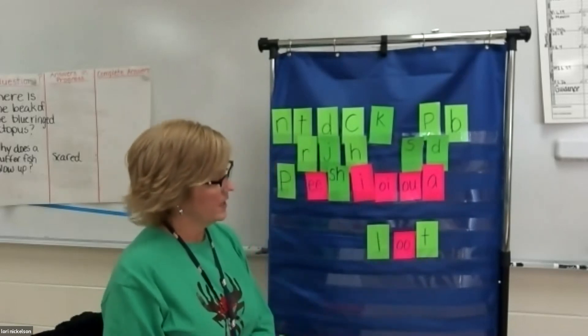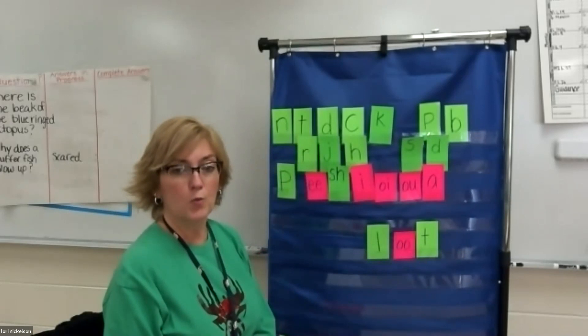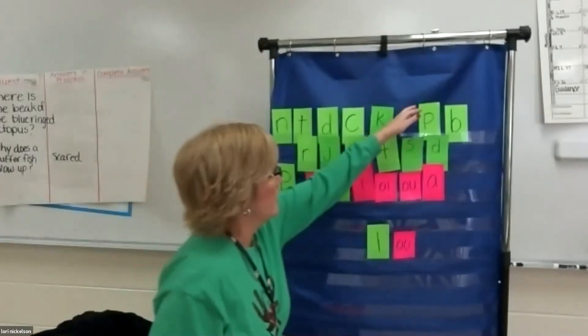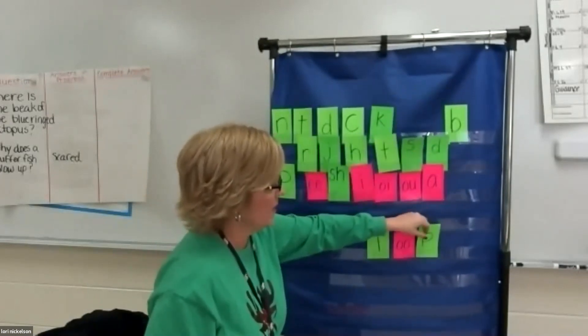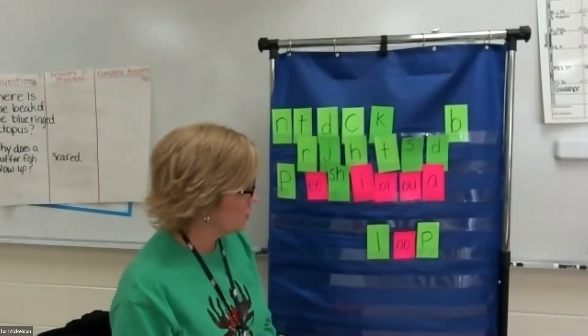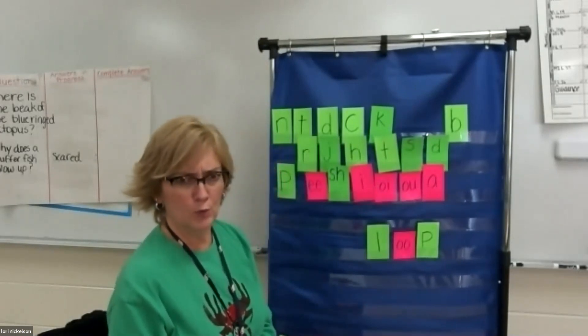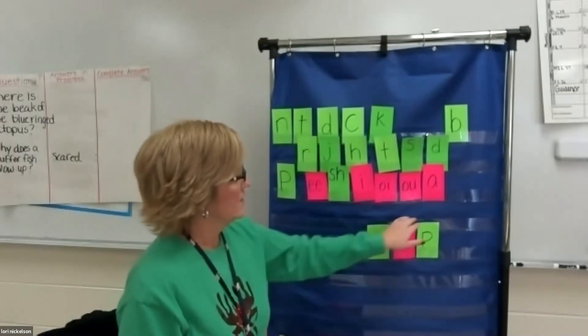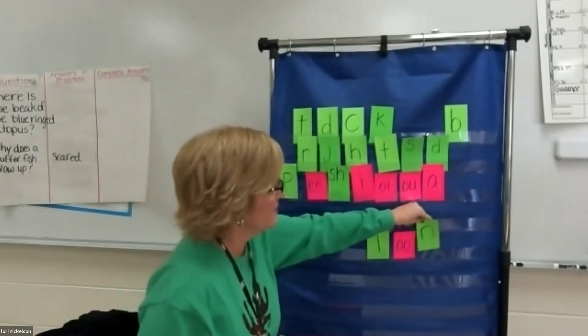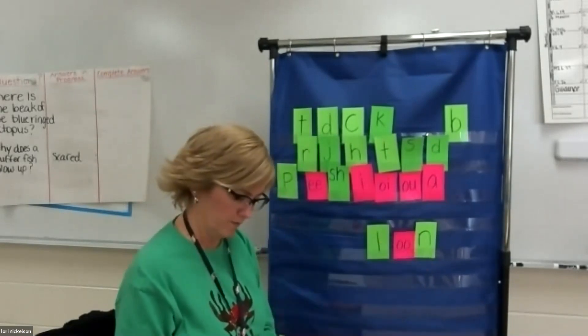Well, what if I want to make loot into loop? What would I do? Take the T off and replace it with a P. And now I have loop. Great. So let's make the word loon. Let's take the P off and we'll replace it with the N. And now I have loon. Wonderful.